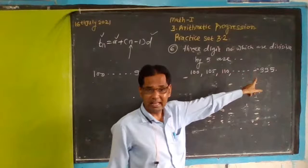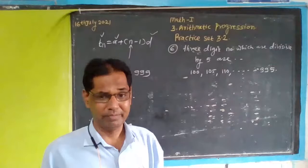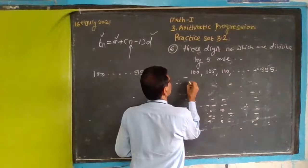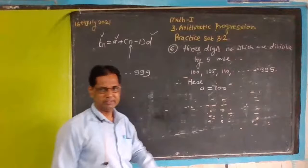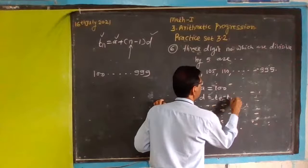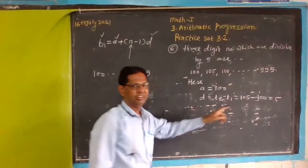So 995 is the last term. Here, A equals 100, the first term. The common difference equals T2 minus T1, which is 105 minus 100, and that is 5.